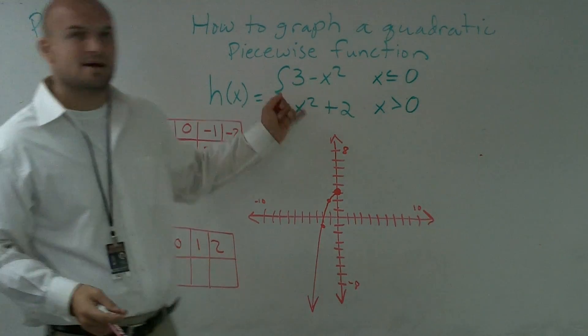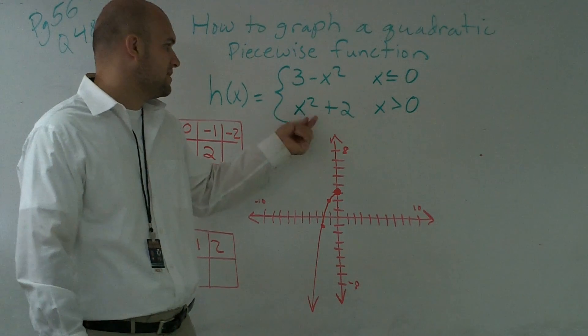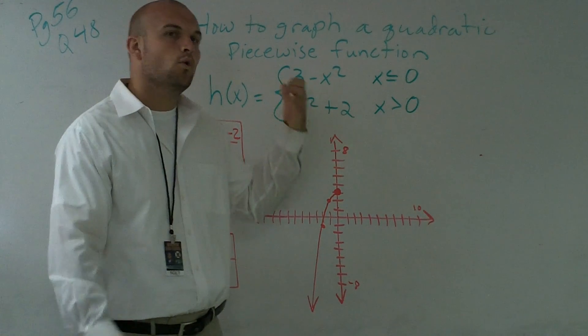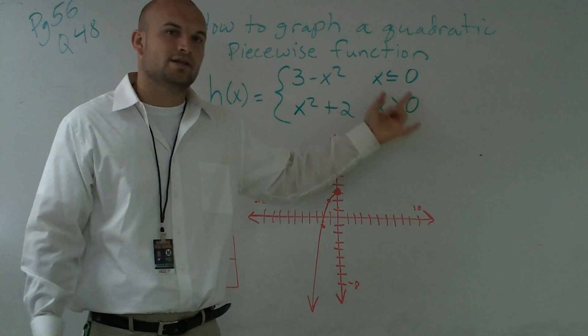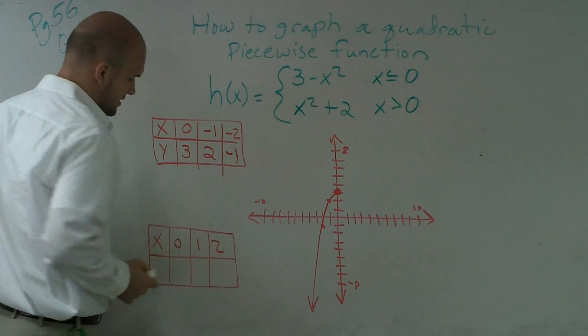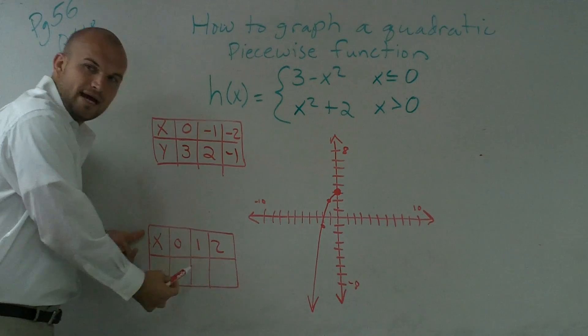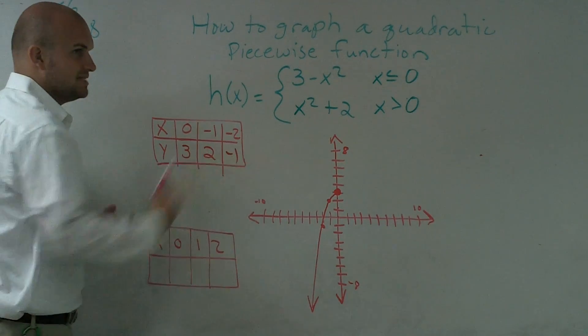All right, now I need to look at my next function part on my piecewise. This says x squared plus 2 when x is greater than 0. So now what I do is I created a separate table to help me graph these points.